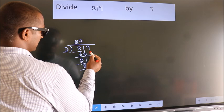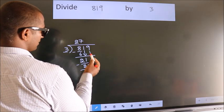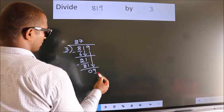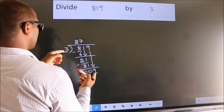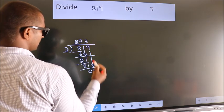After this, bring down the beside number. So 9 down. So 9. When do we get 9 in the 3 table? 3 times 3 is 9.